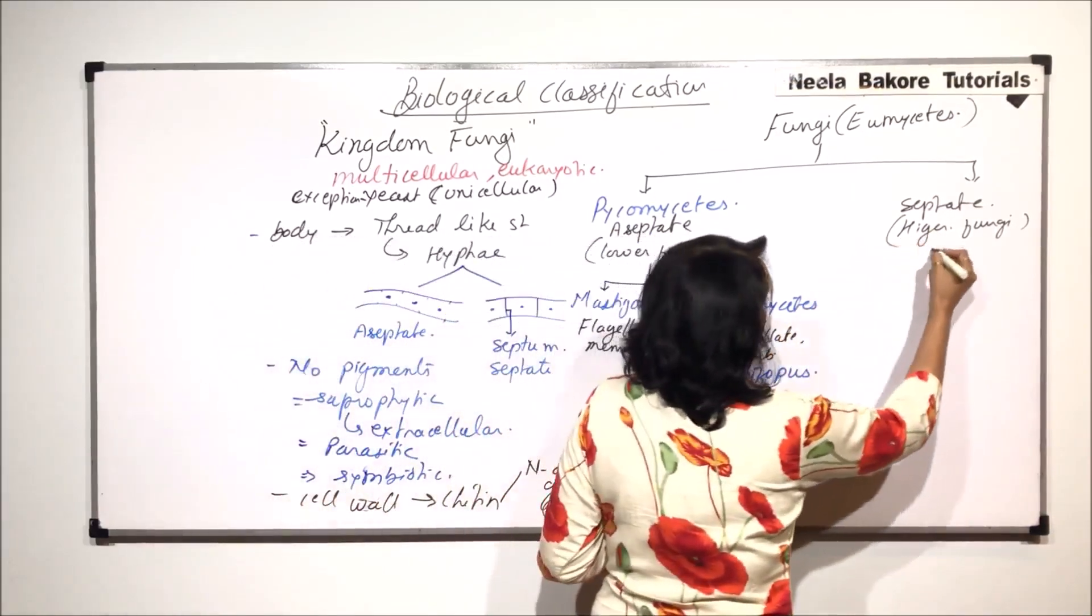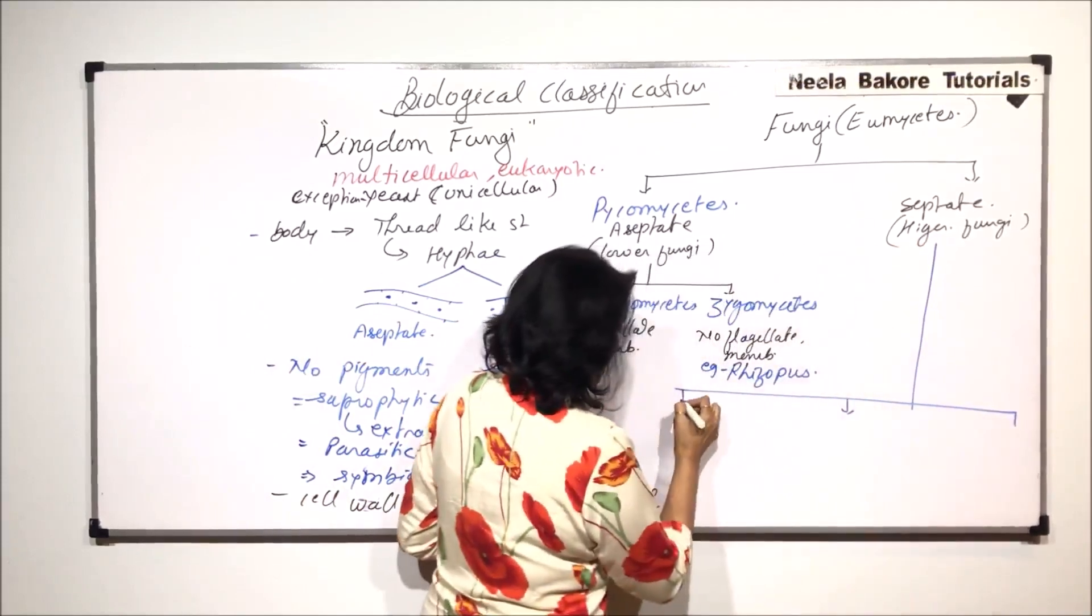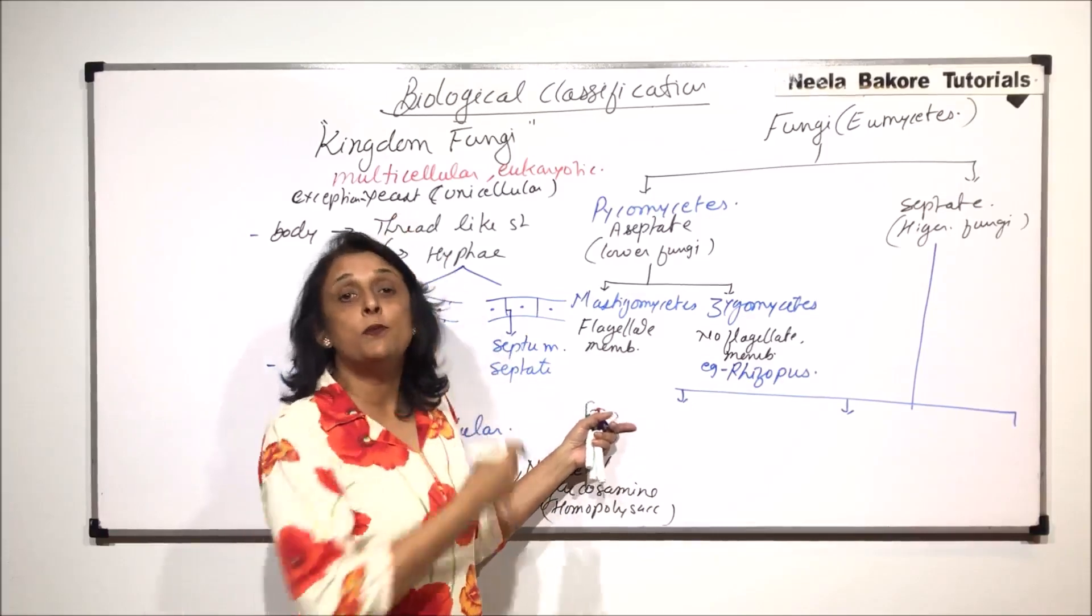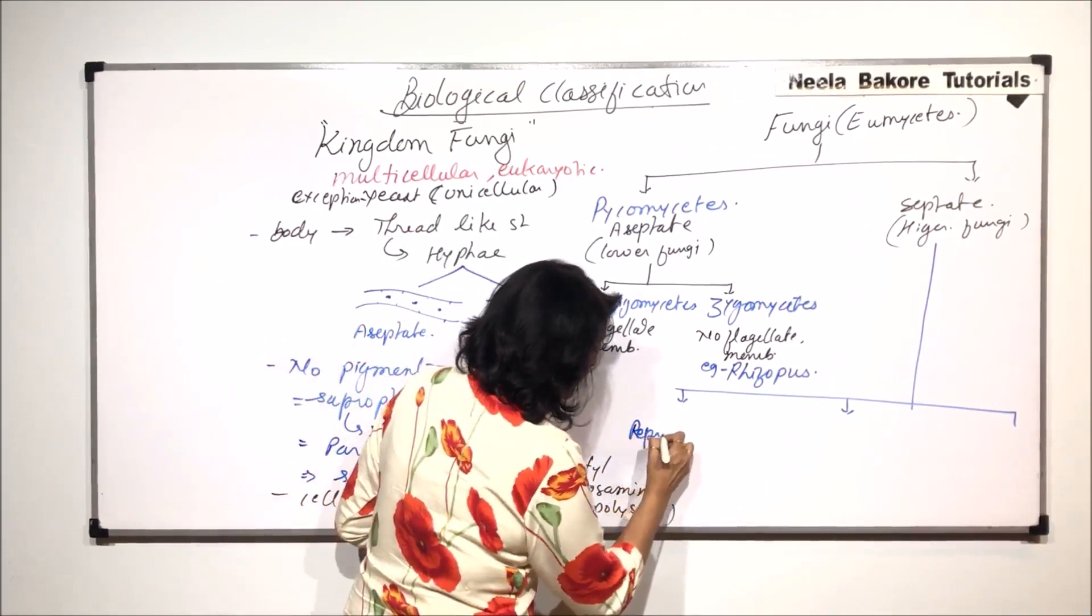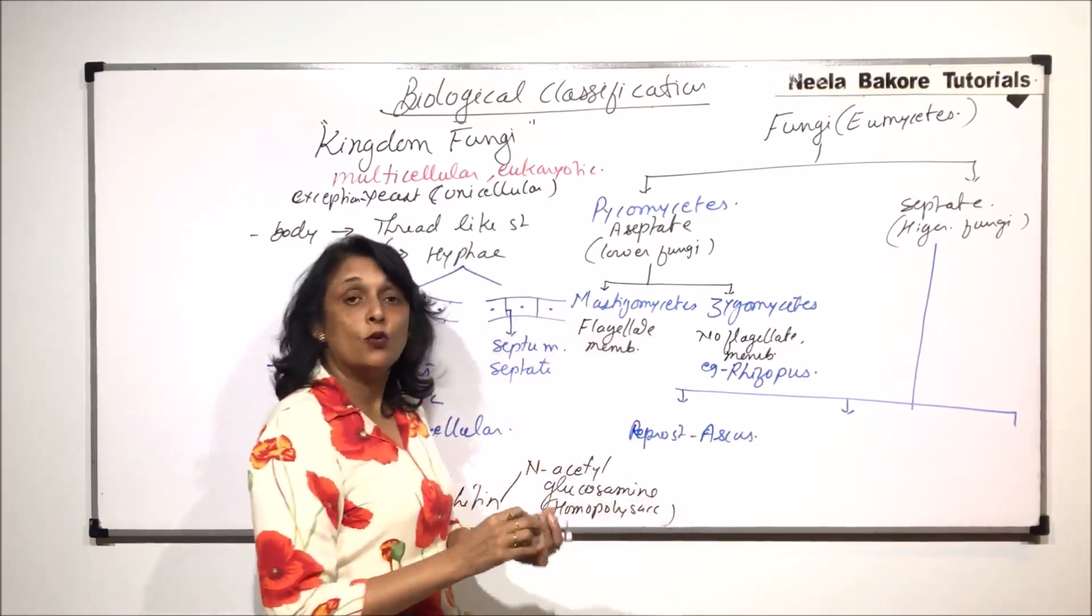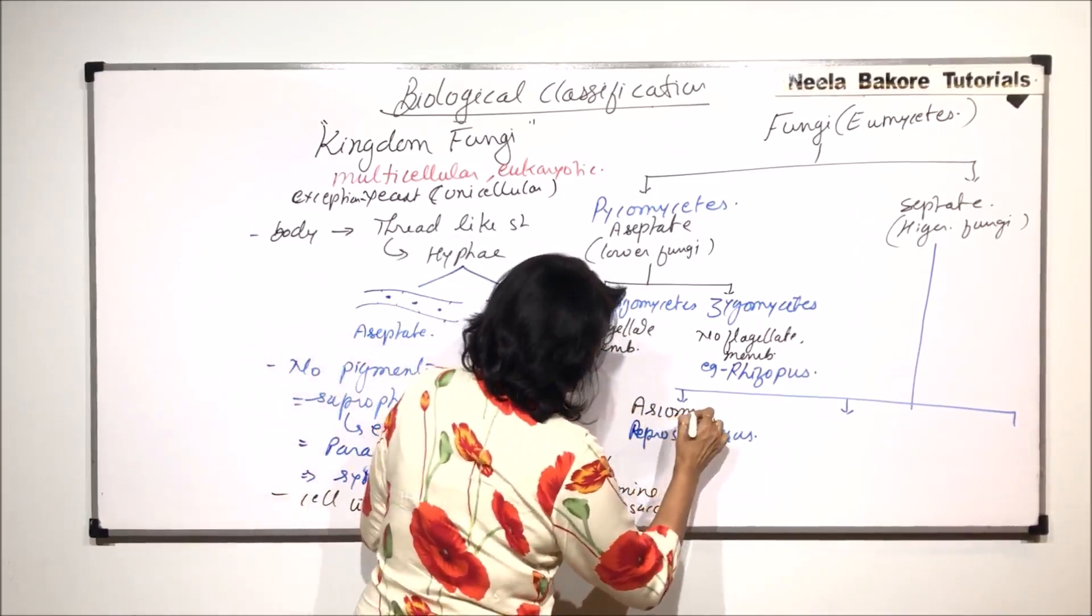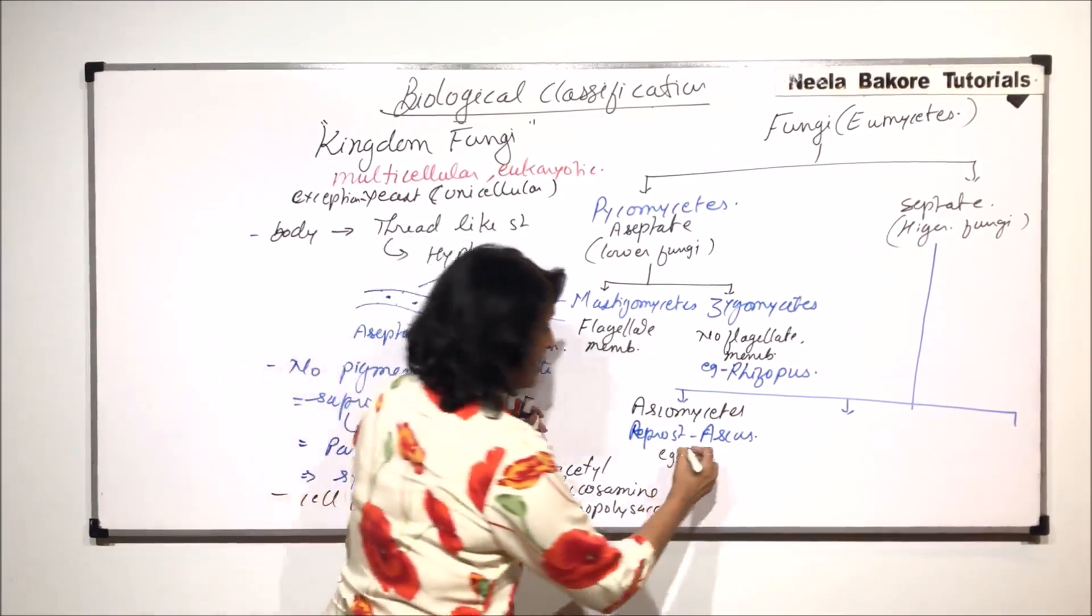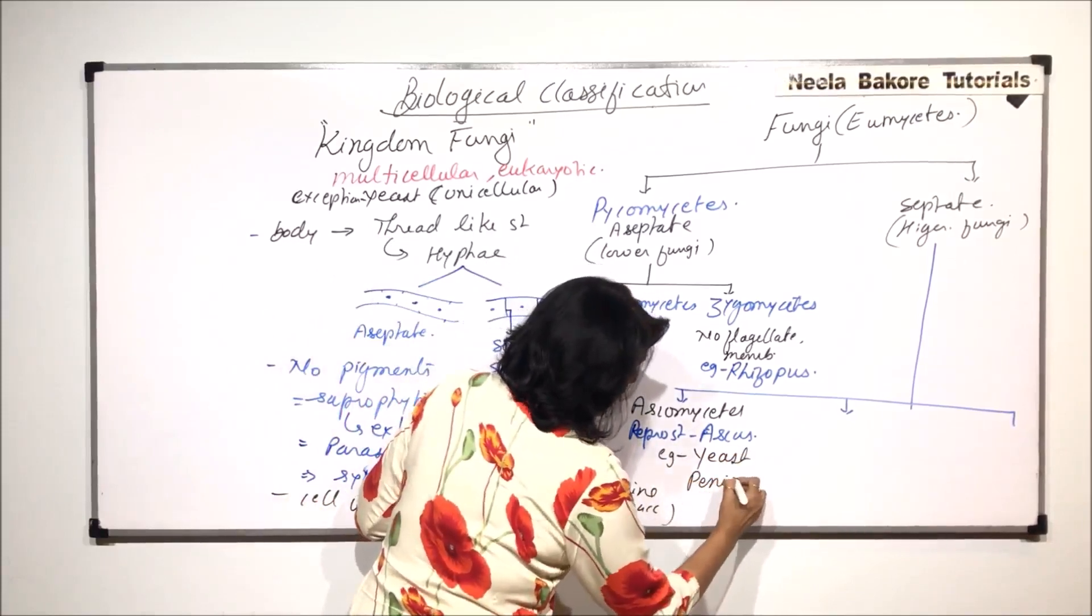Now let us come to this other group. This is divided into three categories on the basis of what is that reproductive structure. If the reproductive structure is ascus, then the group will be called ascomycetes. And in this, we take two examples. One is of yeast and the other is of penicillium. And we'll be talking about the life cycles of both.